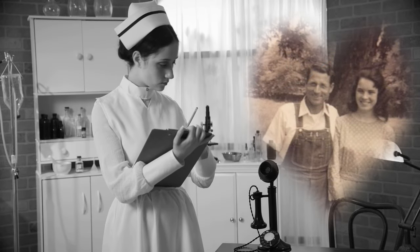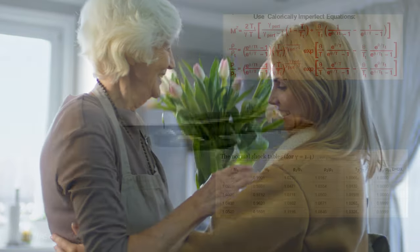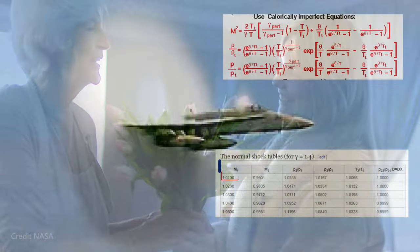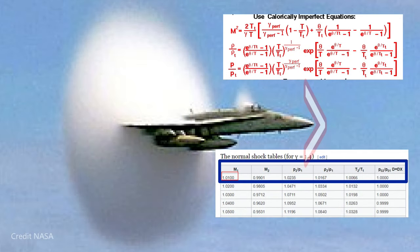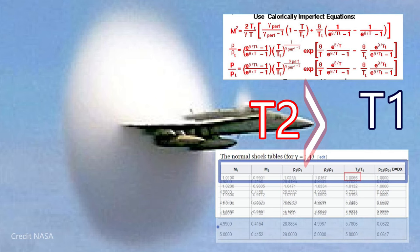Mothers have a unique place in our life, and Mother's Day is an important time. So I was rushing when I looked at the normal shock tables and calculated the temperature at Mach 5. T1 is the upstream temperature before compression in the shockwave. T2 is the downstream temperature that an aircraft experiences flying just behind the shockwave.